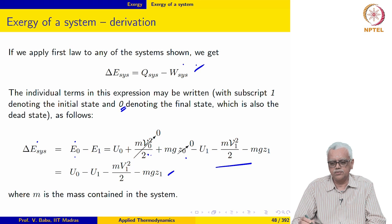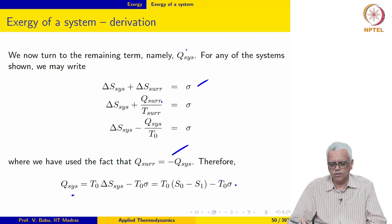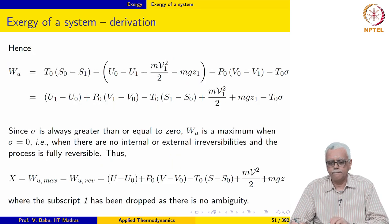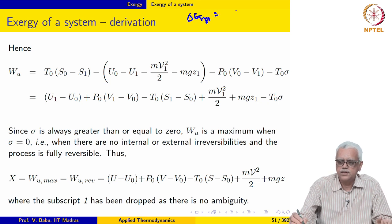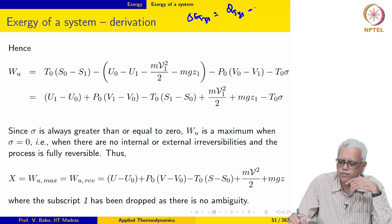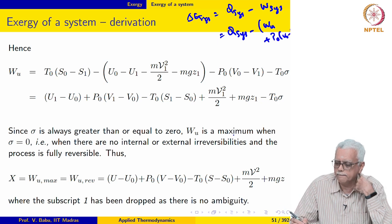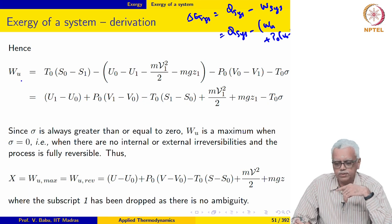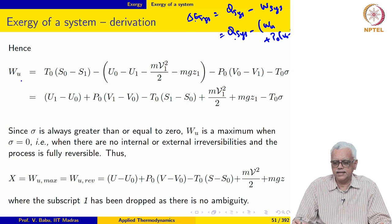We have decomposed all these three terms. What we are going to do now is take WU to the left hand side and develop an expression for WU. We basically wrote delta E SYS equal to QSYS minus WSYS, and this itself was written as WU plus P0 times V0 minus V1. We rearrange and get this expression for WU after substituting for QSYS and delta E SYS.